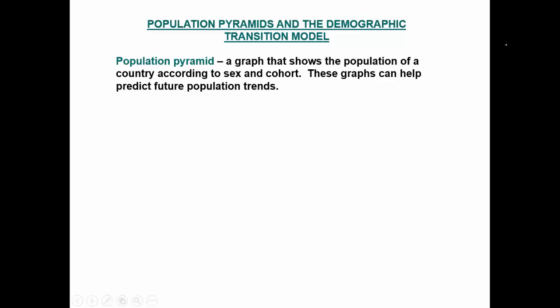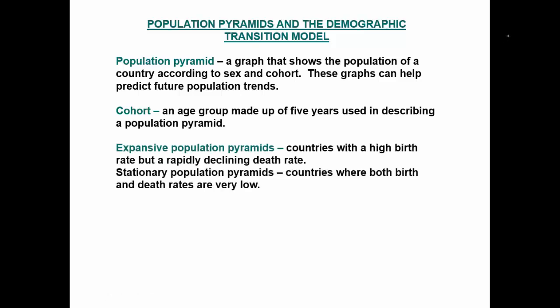A population pyramid is a graph that shows the population of a country according to sex and cohort. These graphs can help predict future population trends. A cohort is an age group made up of five years used in describing a population pyramid. An expansive population refers to countries with a high birth rate but a rapidly declining death rate. Stationary population pyramids describe countries where both birth and death rates are low.